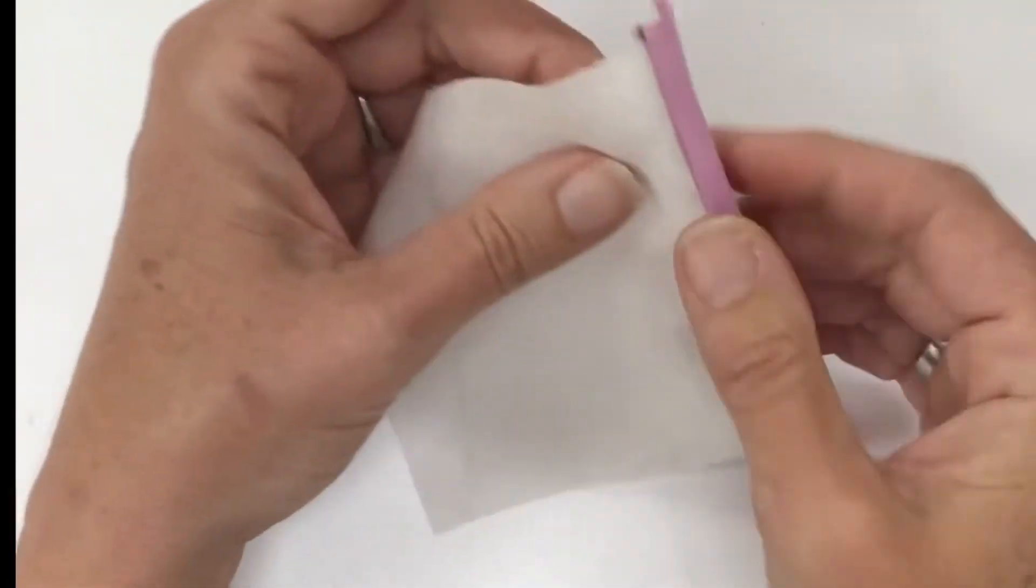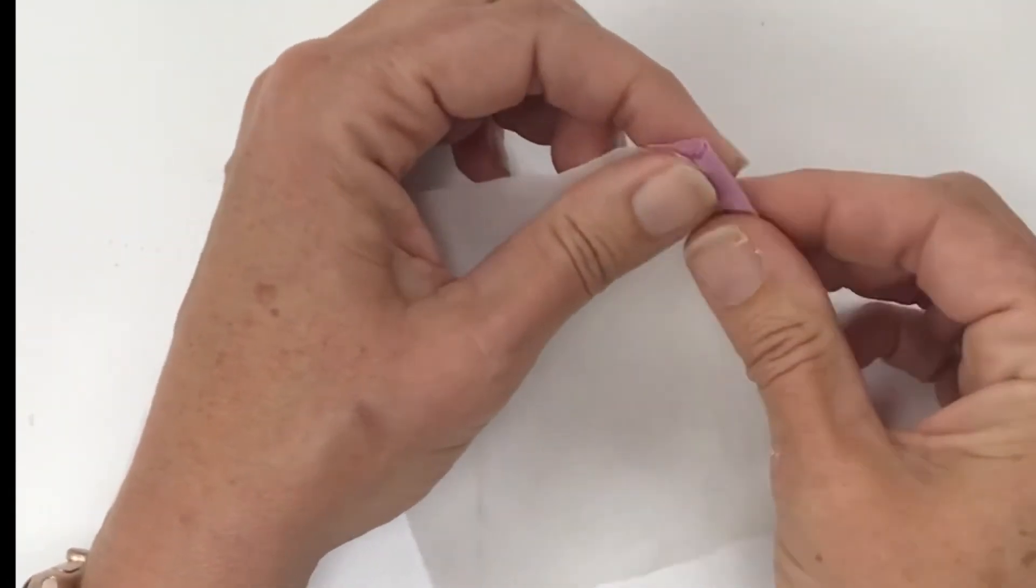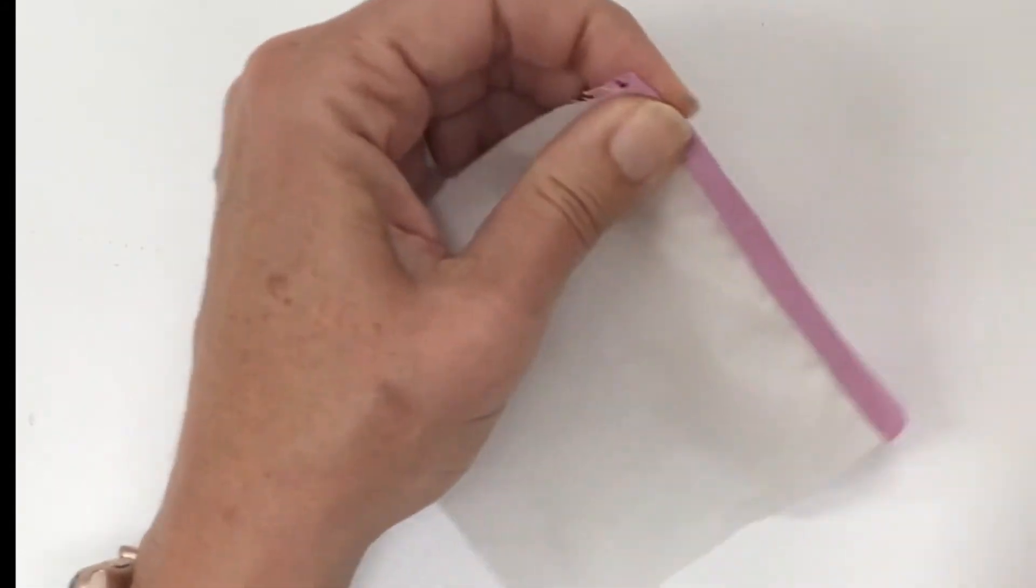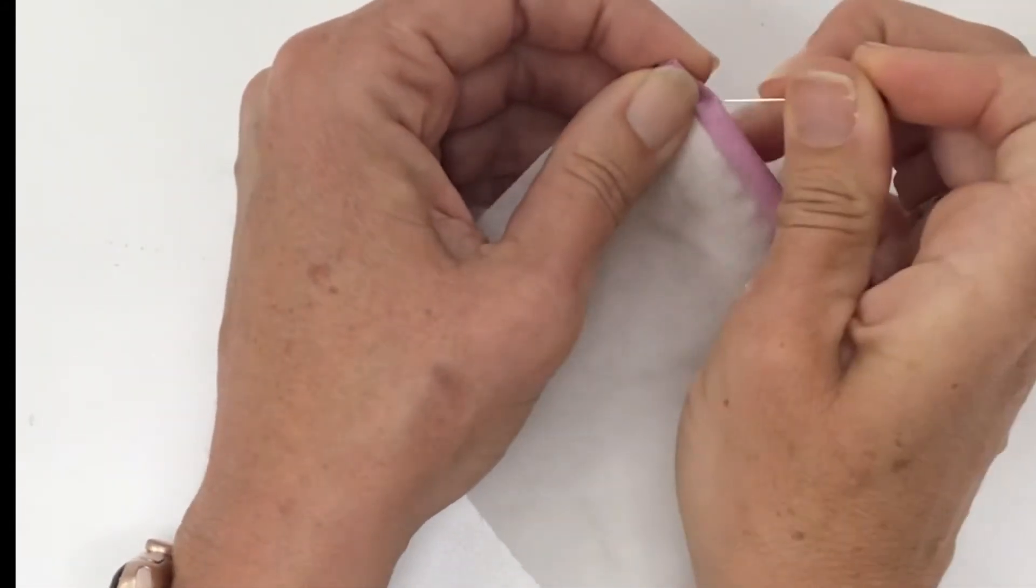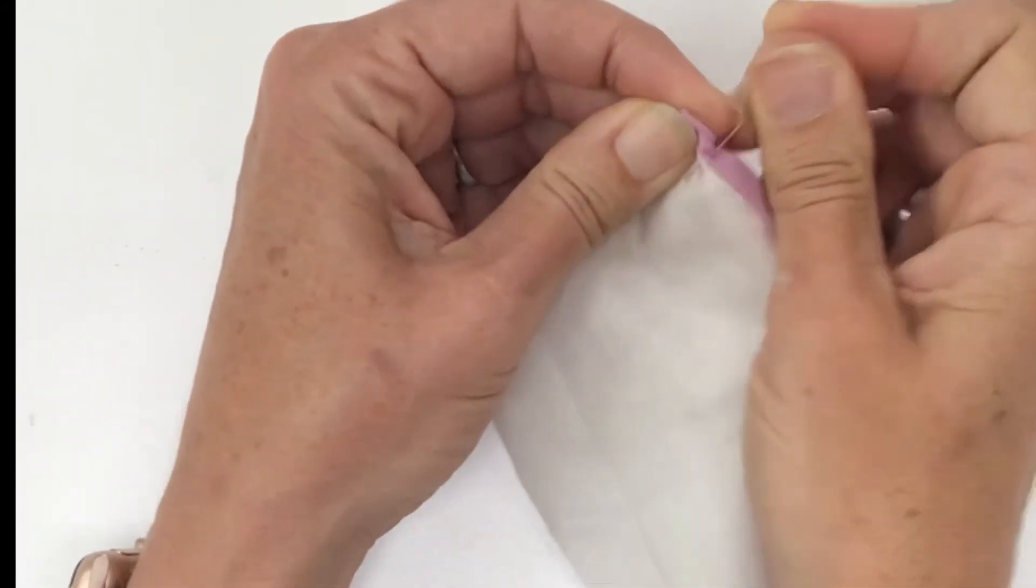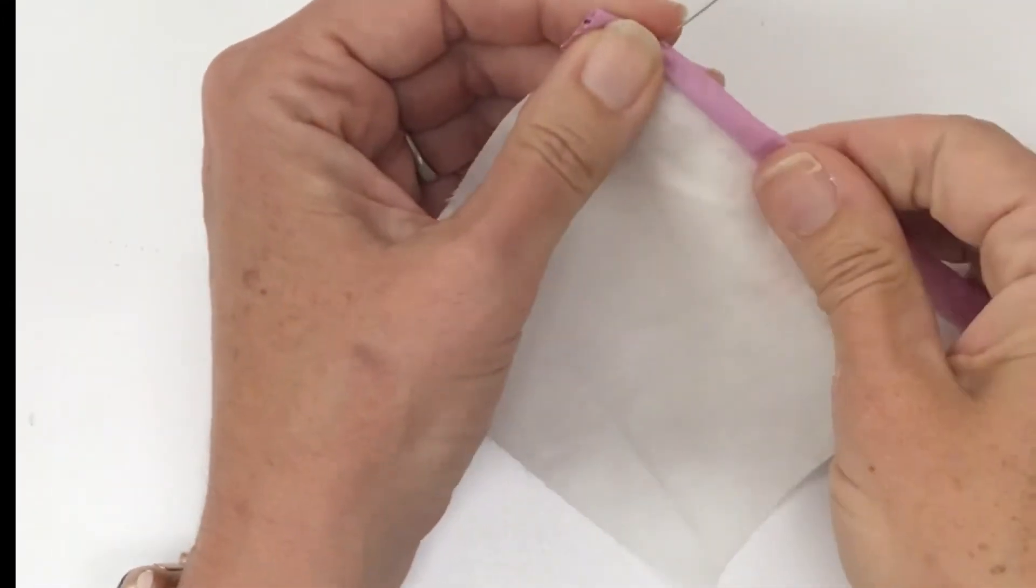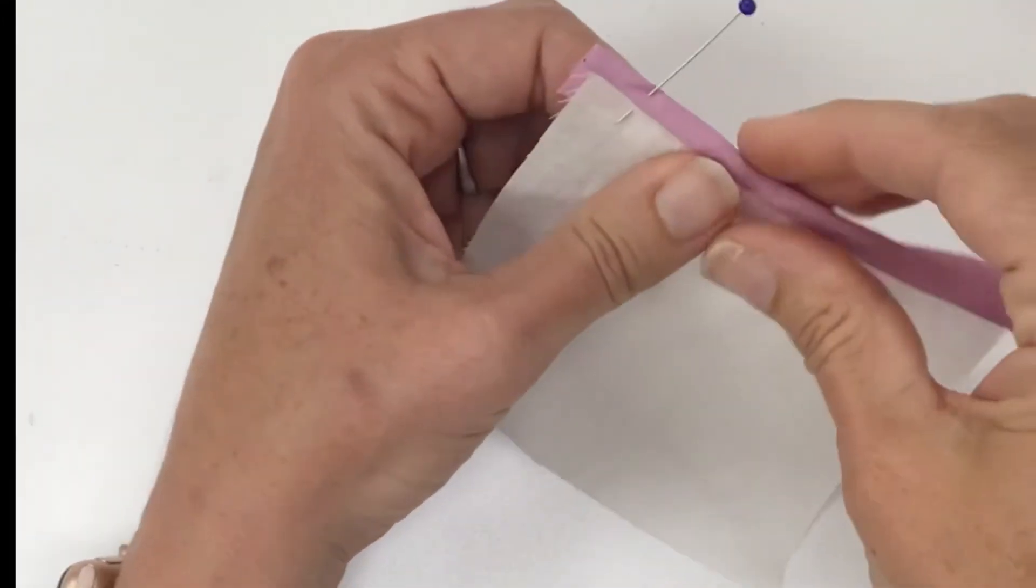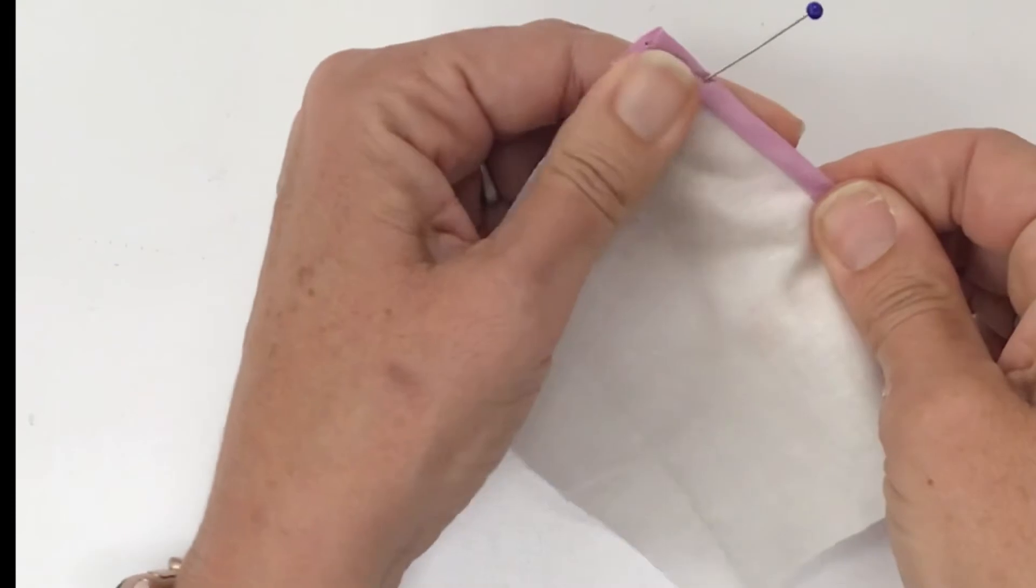I'm going to go ahead and pin this into place and then I will take it to the sewing machine not feeling like hand stitching today. I like to put my pins in perpendicular from my stitch line so that it's really easy to pull out.